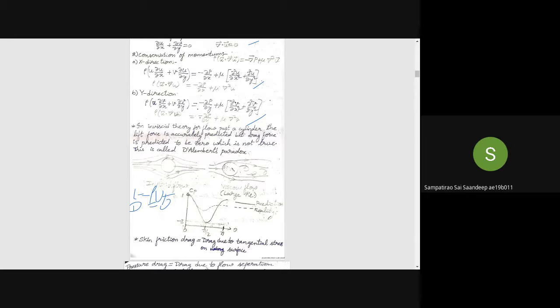When this inviscid theory was developed, the viscous flow concept was not there, so they termed this as d'Alembert's paradox. For an inviscid flow, the flow over a cylinder will be like this, but for a viscous flow...